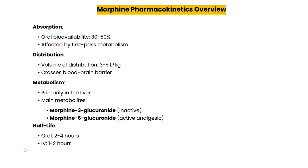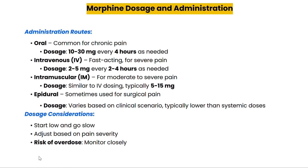Morphine is administered in several ways depending on the severity of pain and the patient's needs. The oral route is common for chronic pain, while intravenous (IV) and intramuscular (IM) injections are often used for severe acute pain. Dosing morphine requires precision to avoid overdose or dependence. For adults, the typical oral dosage starts around 10 to 30 mg every four hours as needed for pain relief, but this can be adjusted based on effectiveness and side effects.